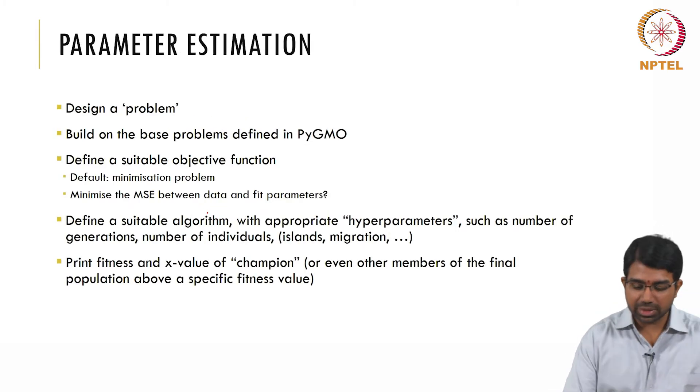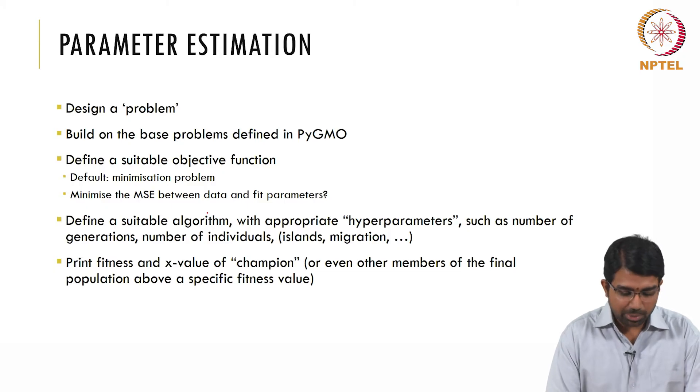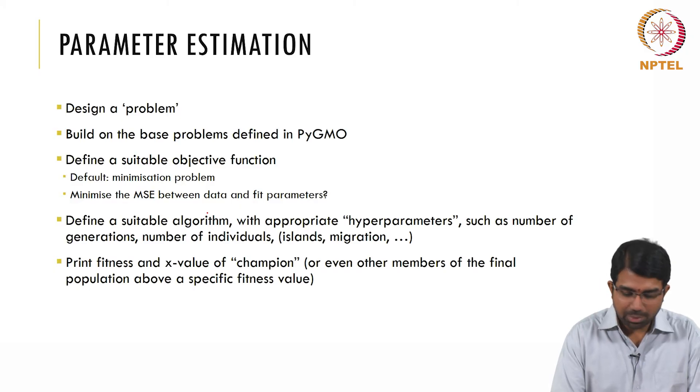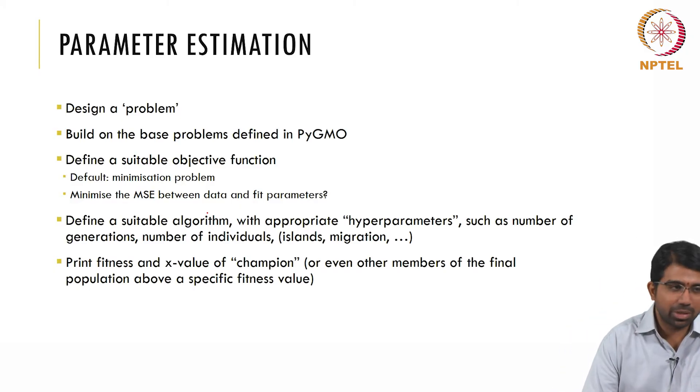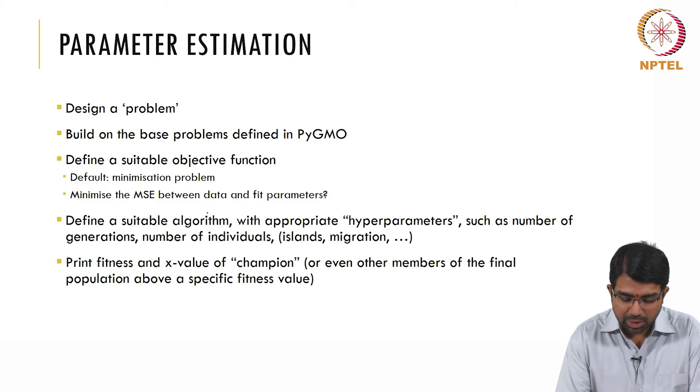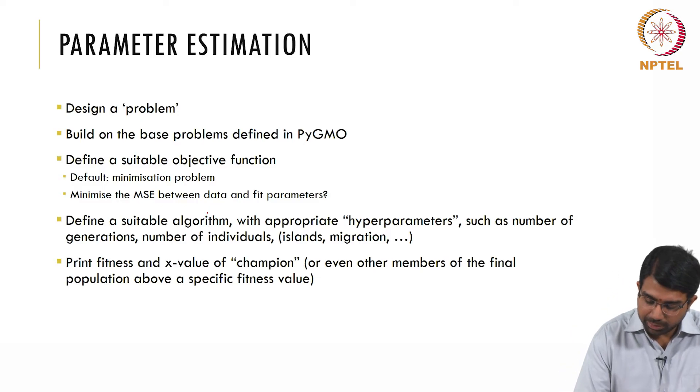So how do we go about in the case of biological problems? You design a problem. There are base problems defined in Pygmo. So you build on that in classic object-oriented fashion. You extend those definitions. The default is a minimization problem. Maybe you can minimize the mean square error between data and fit parameters or use whatever objective function we have been talking about all along. Define a suitable algorithm with appropriate hyper-parameters such as generations, number of individuals, etc.